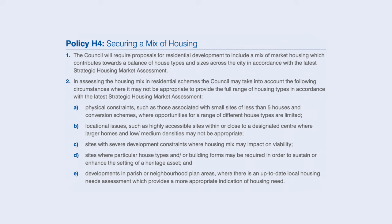Policy H4 is another one I would pick up in the Coventry local plan, and this requires residential developments to include a mix of market housing which contributes towards a balance of house types and sizes across the city in accordance with the latest strategic housing market assessment. Again, this draws on the fact that a competitive and healthy market will have a variety of sites, sellers, and house types to meet all different needs. Bringing forward that policy is particularly good for smaller developers, because we are meeting that smaller supply that the big house builders don't meet.